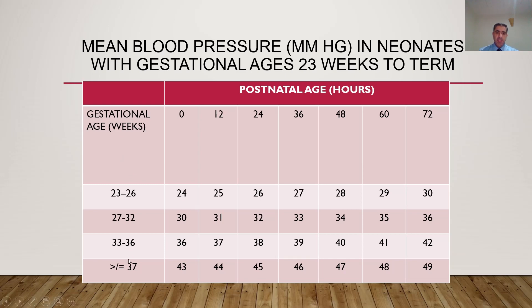This table represents accepted blood pressure according to gestational age. On the left is gestational age and across the top is postnatal age in hours. At any gestation and at 72 hours of age, the minimum accepted mean blood pressure is 30 mmHg — this is a golden rule. Blood pressure correlates with gestational age at zero hours and rises every hour until reaching a minimum of 30 at 72 hours.